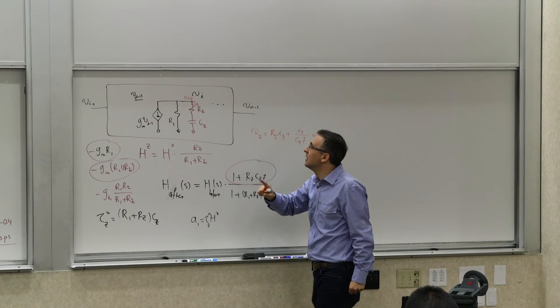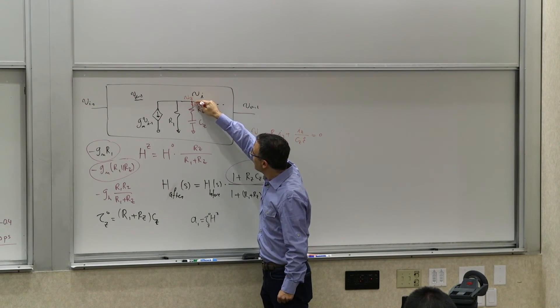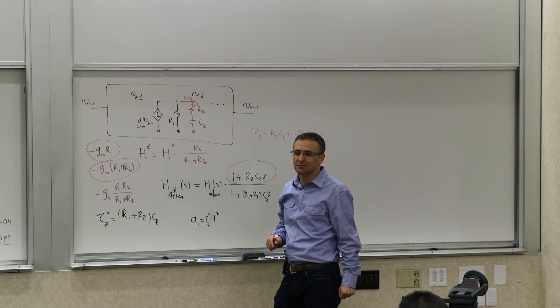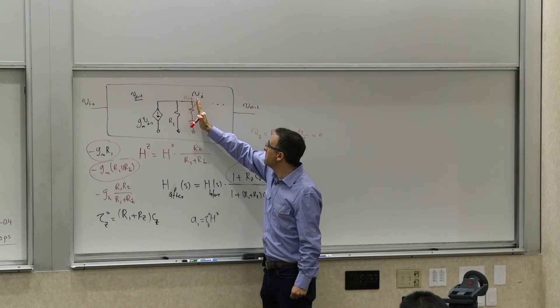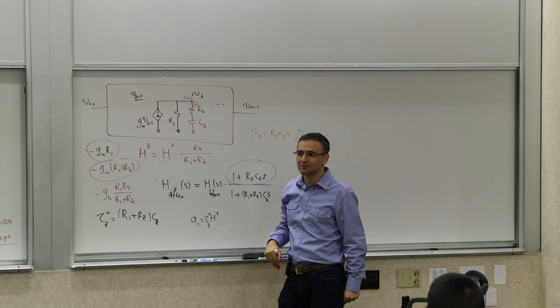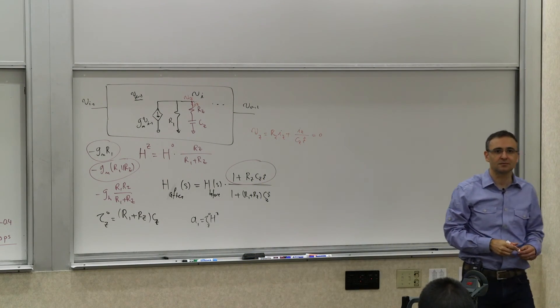It's a complex frequency. At some complex frequency, this can be forced to be zero, meaning that this branch at that complex frequency shorts it to ground, meaning that nothing gets to the output. It's the definition of a zero. Okay?